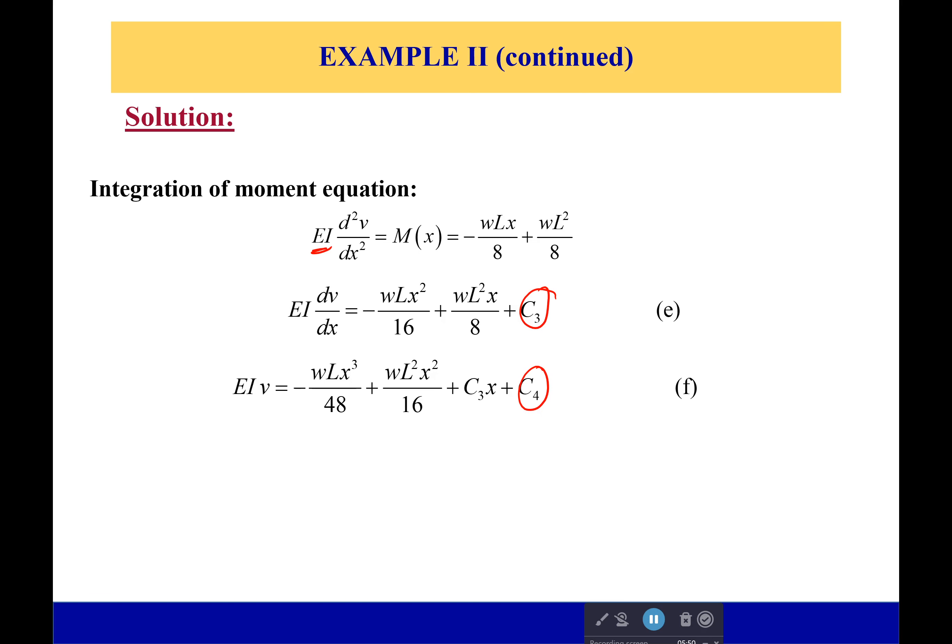Well, the issue is these are two new constants. We have one boundary condition and guess what—we're going to have two continuity conditions where these two beams connect.